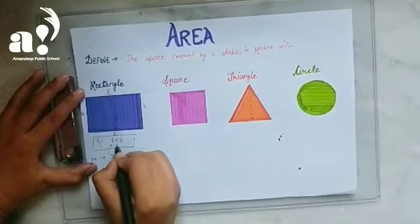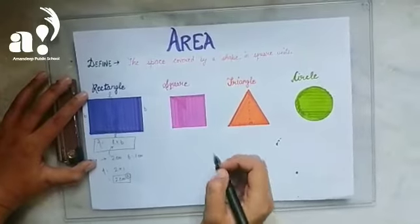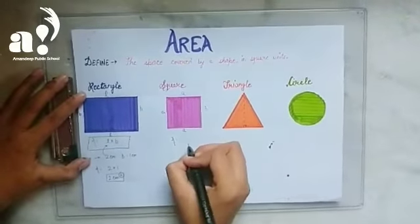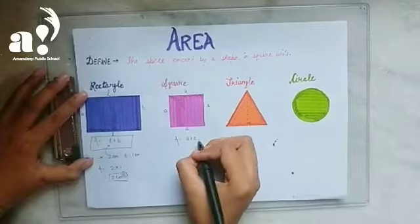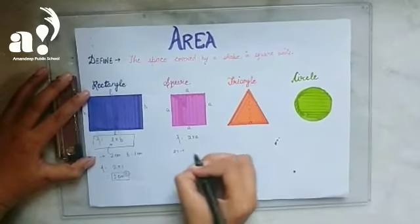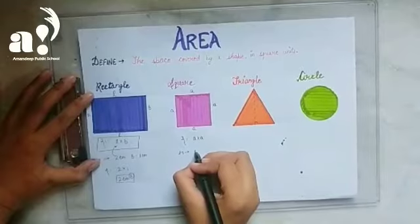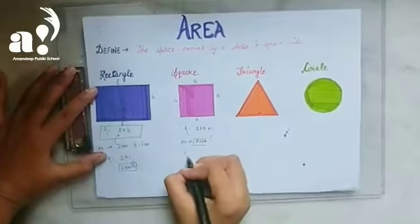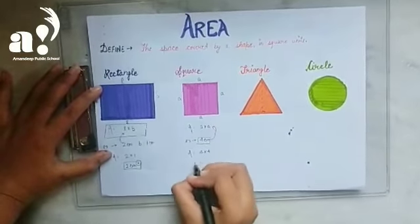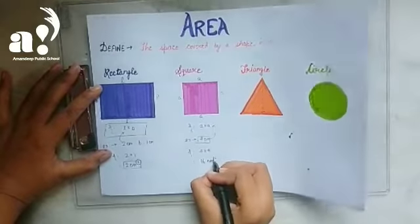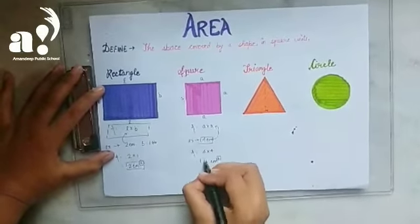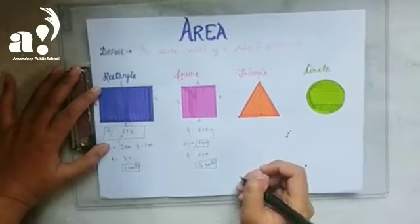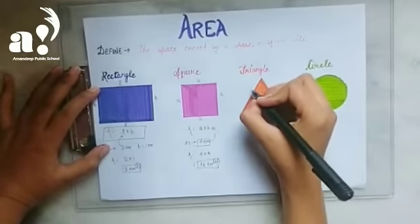Now for the square. We know that all 4 sides of a square are equal, so the formula to find the area of a square is a × a (i.e., side × side). For example, if a square has a side of 4 cm, then when we put the side into the formula, the area = 4 × 4 = 16 cm². I have written 'square' (cm²) again because whenever we find area, writing the square unit is very important — if you don't write it, your answer can be marked wrong.